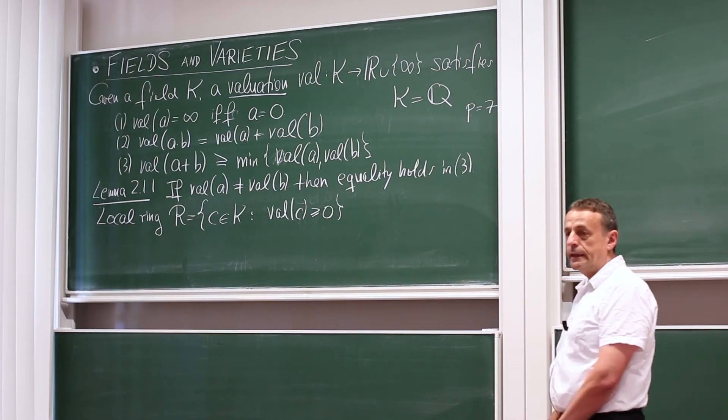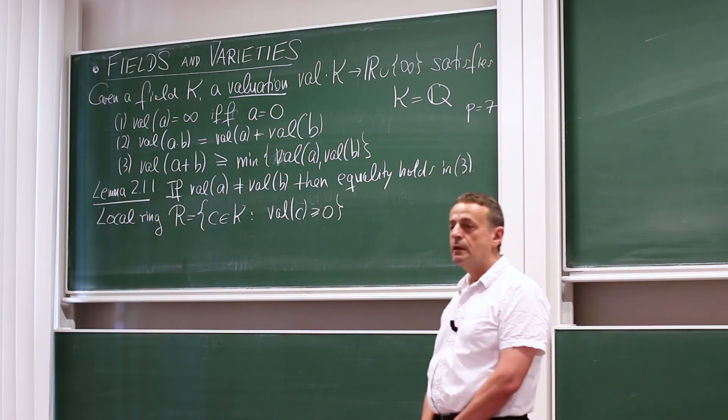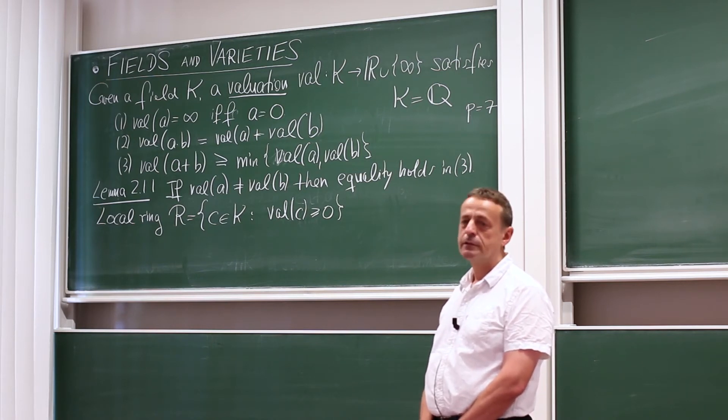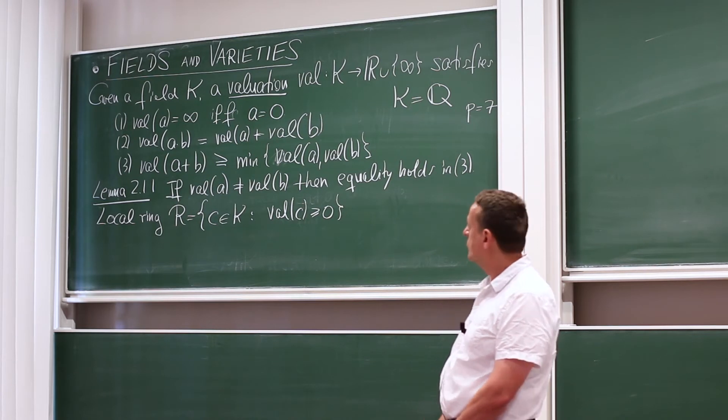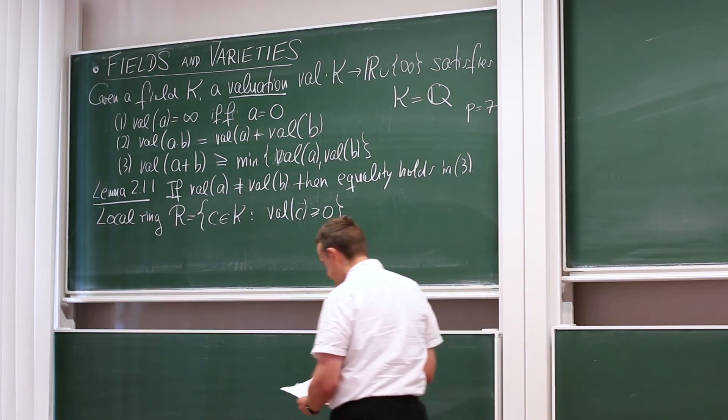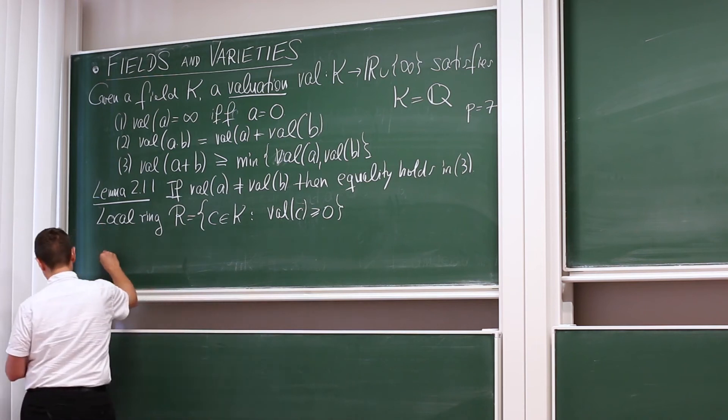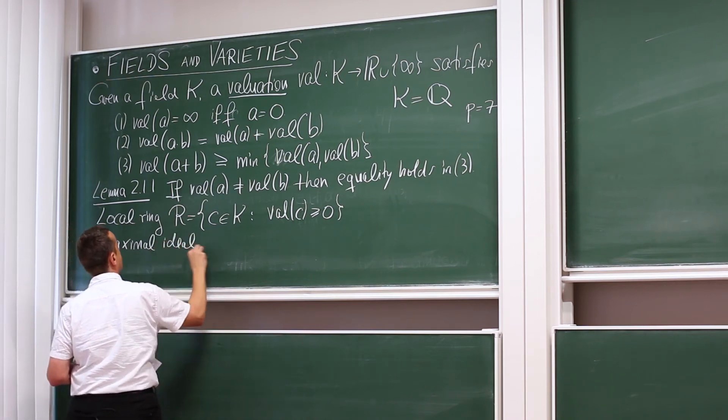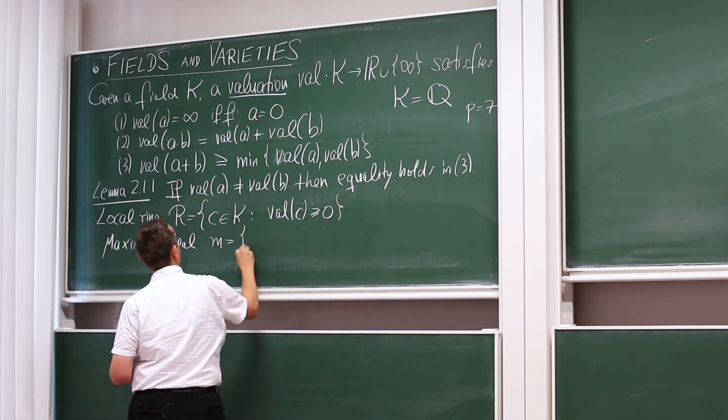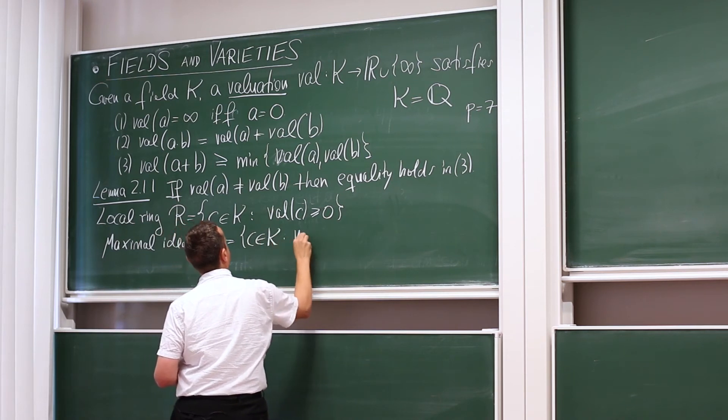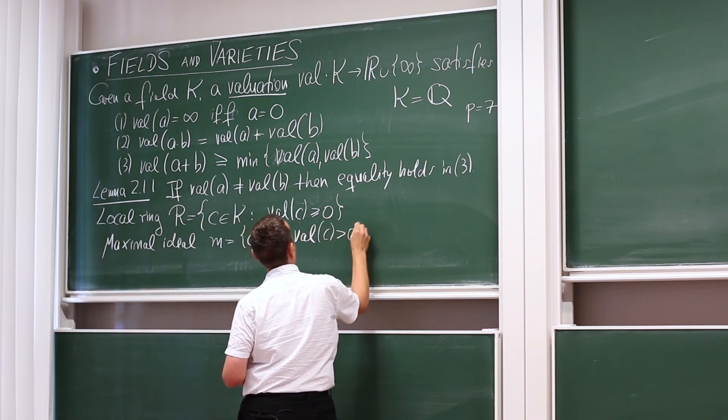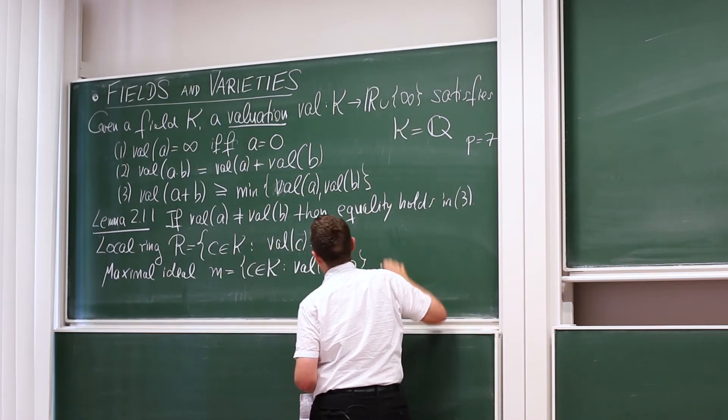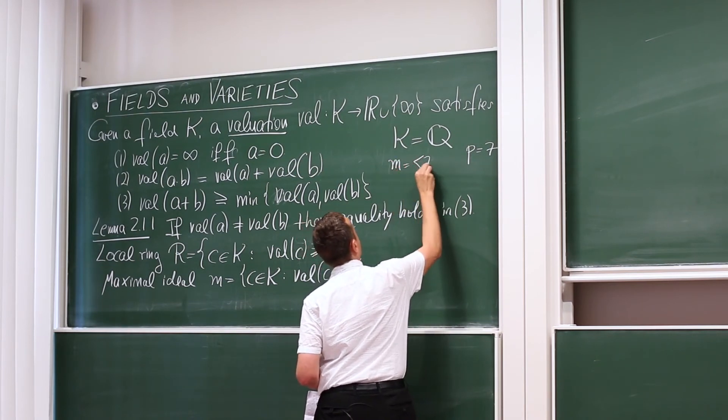So in K, in the rational numbers, these would be the subring of the rational numbers consisting of all rationals whose denominator is relatively prime from 7. So only the numerator can contain it. Then we have the maximal ideal. So local ring has a unique maximal ideal. This is all field elements with strictly positive valuation. So in our example, the maximal ideal M is the ideal generated by 7.